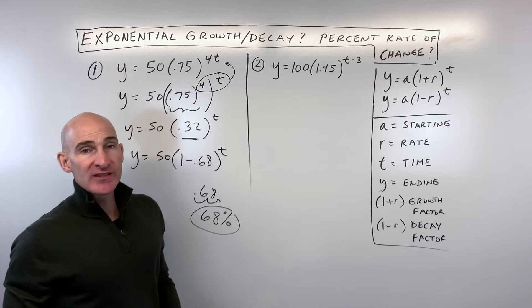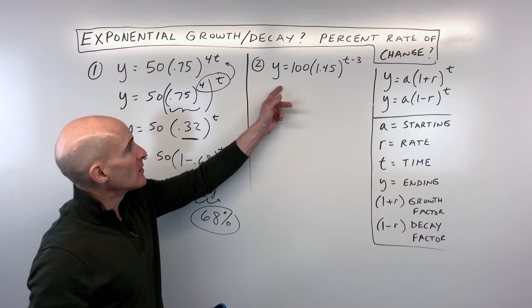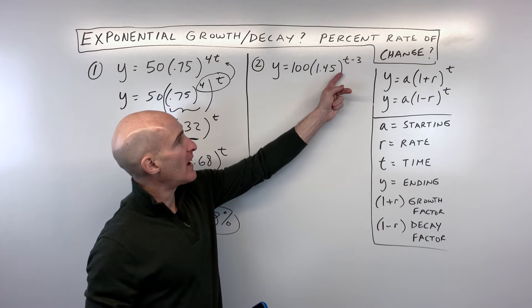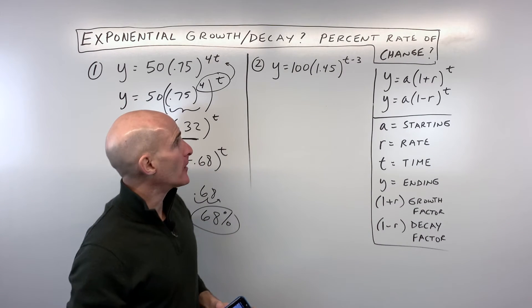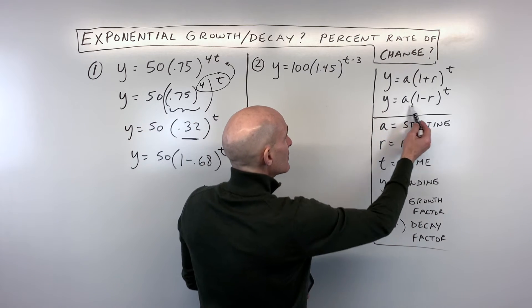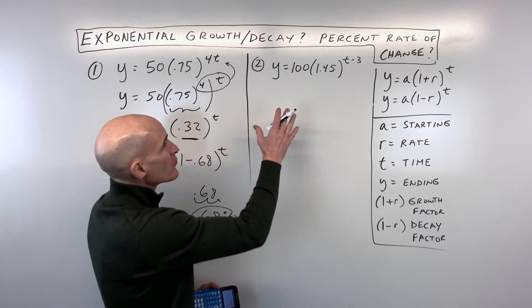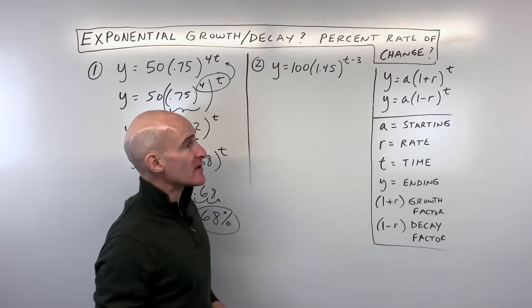Let's look at another example, so number two, this one's slightly different. We've got y = 100 times the quantity 1.45 to the t minus 3 power, again it's not matching one of these two exponential functions, so how can we rewrite it so it looks a little bit more closely like one of those there?